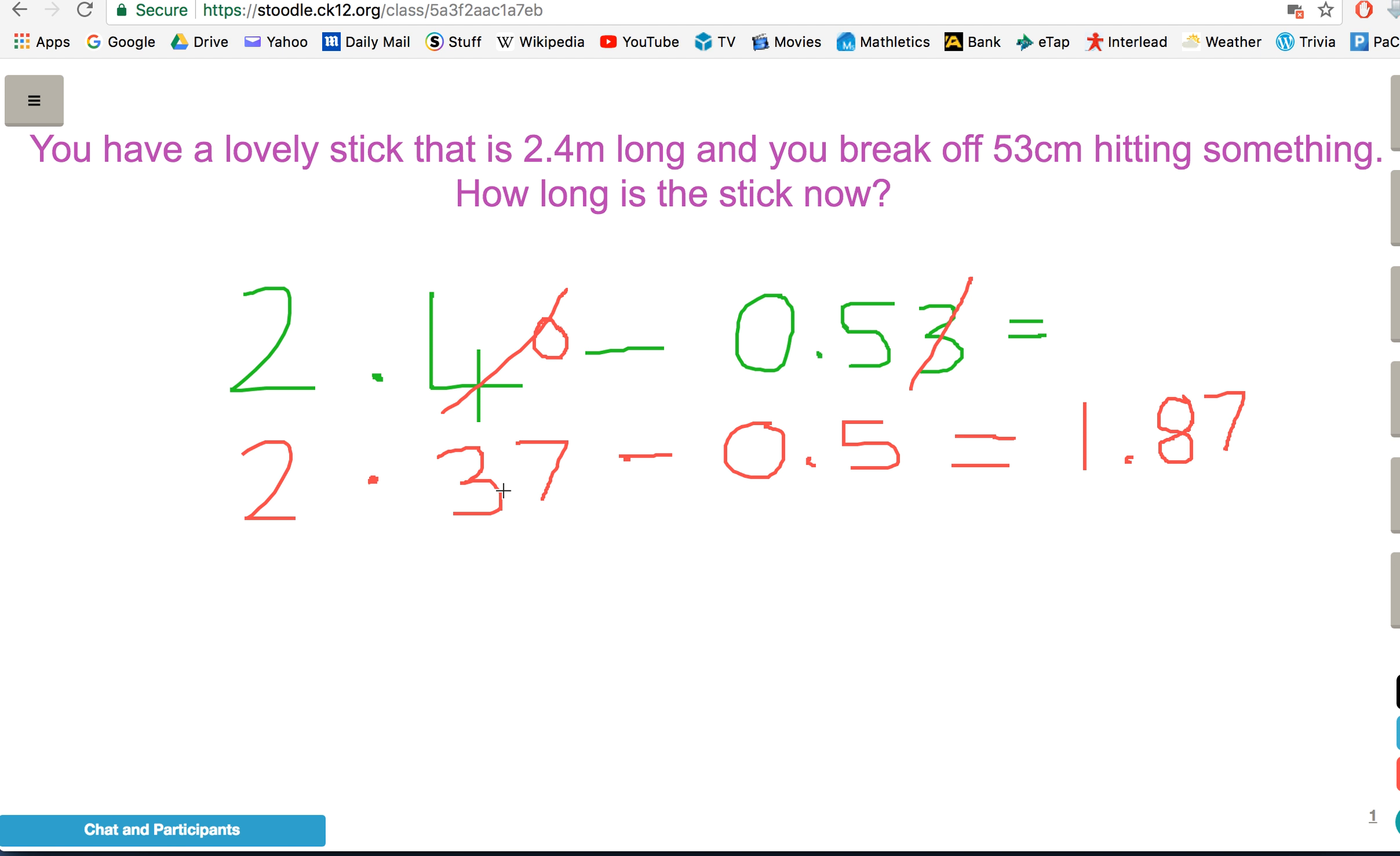Okay. Three-tenths gone, 2.07. Another two-tenths is going to be 1.87.